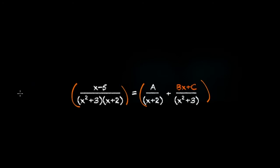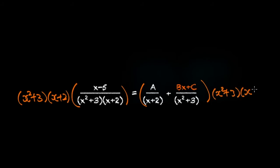When we multiply both sides by the common denominator, x squared plus three times x plus two, then on the left, x squared plus three is going to cancel with x squared plus three, and x plus two is going to cancel with x plus two.